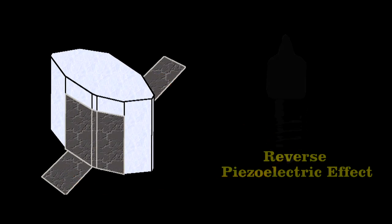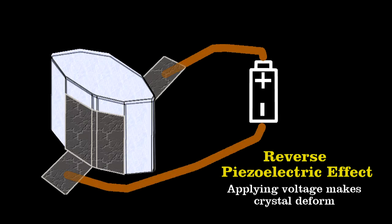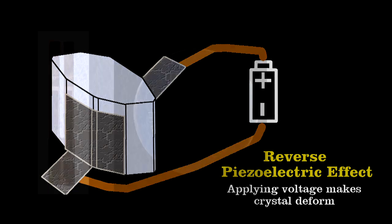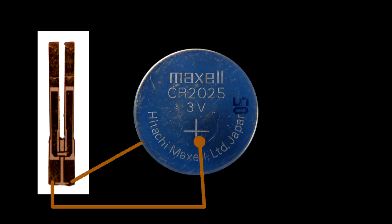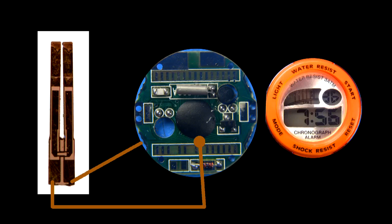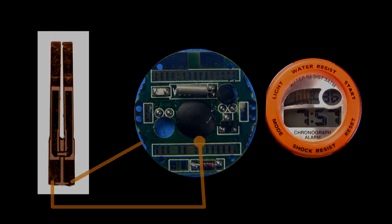The reverse also happens. If you place a voltage across the crystal, it deforms. This is how the quartz tuning fork in the watch is pinged. A voltage from the battery sets it in motion, and then the watch's circuitry measures the current fluctuations that represent the resonant motions of the tines.